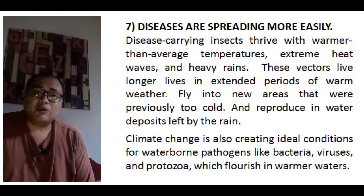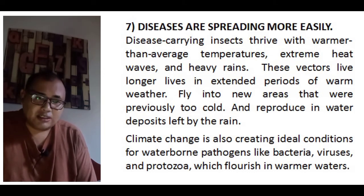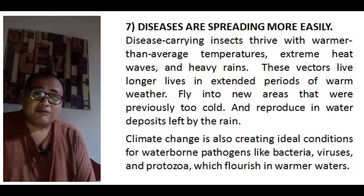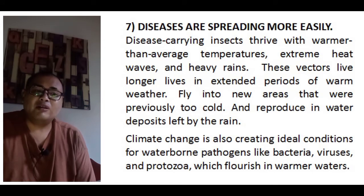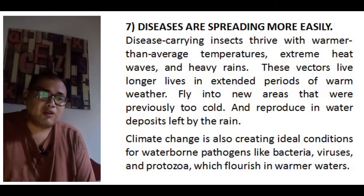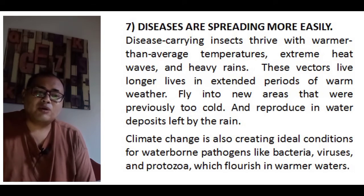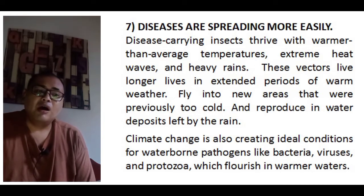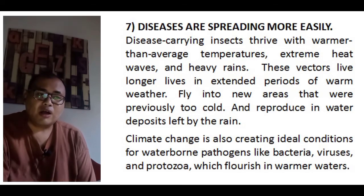Seventh and lastly, diseases are spreading more easily. Warmer-than-average temperatures, extreme heat waves, and heavy rains are causing insects to thrive. Vectors like mosquitoes live longer lives during extended periods of warm weather. Mosquitoes fly into new areas that were previously too cold and reproduce in water deposits left by rain. Climate change is also creating ideal conditions for waterborne pathogens like bacteria, viruses, and protozoa, which flourish in warmer waters.